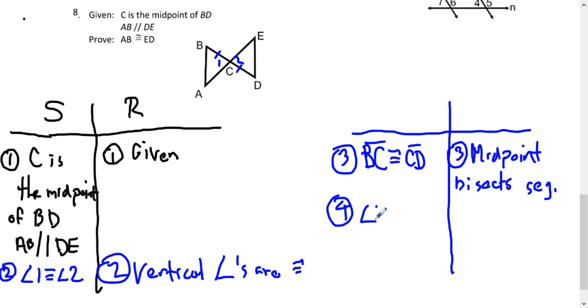So I can say that angle B is congruent to angle D. What's the reason? The reason is if lines are parallel, then alternate interior angles are congruent.